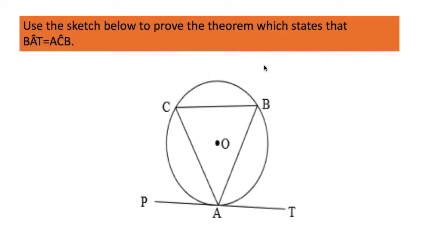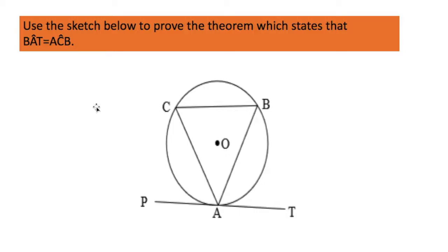The question will appear in a question paper like this. For example, it says: use the sketch below to prove the theorem which states that angle B-A-T is equal to angle A-C-B. When proving a theorem, there are three steps. First, write what you are required to prove. Second, do the construction — if your construction is wrong or missing, you will not get marks. Third, identify which theorems you are going to use.